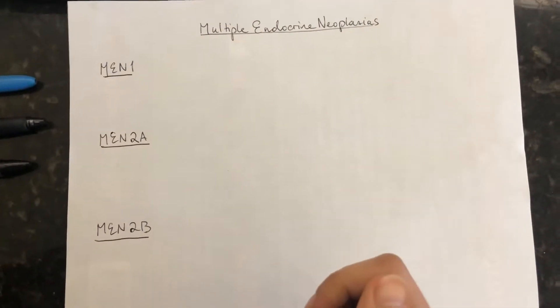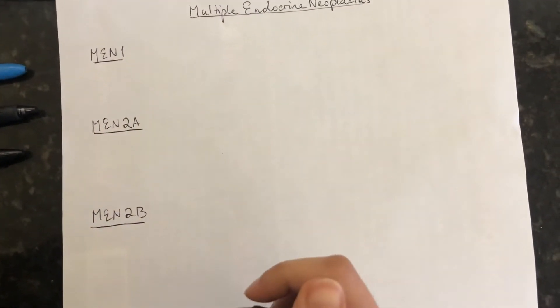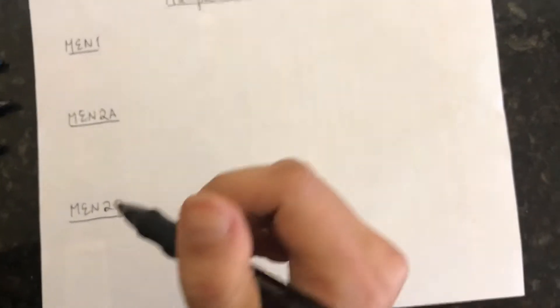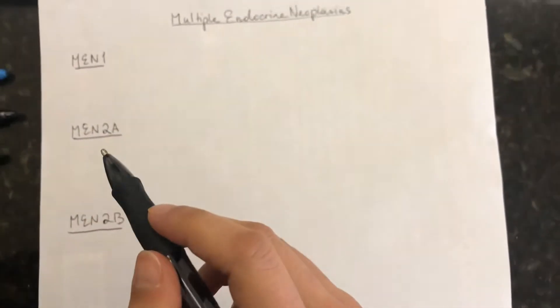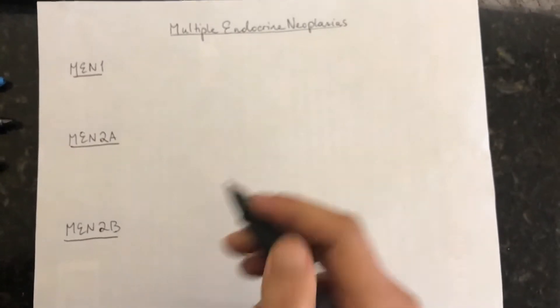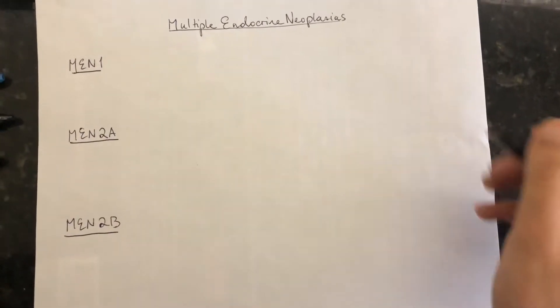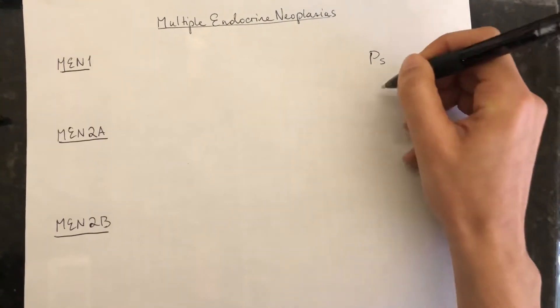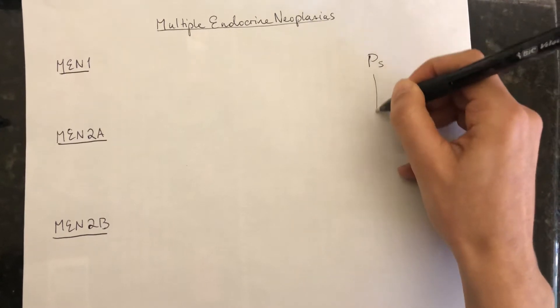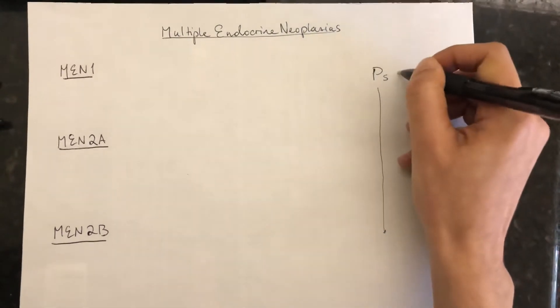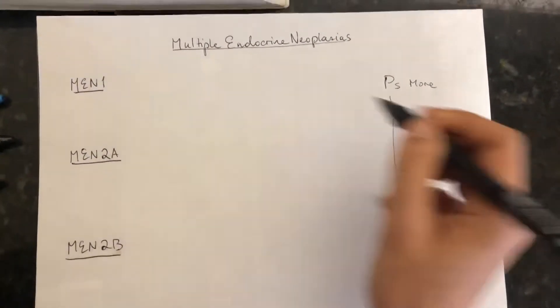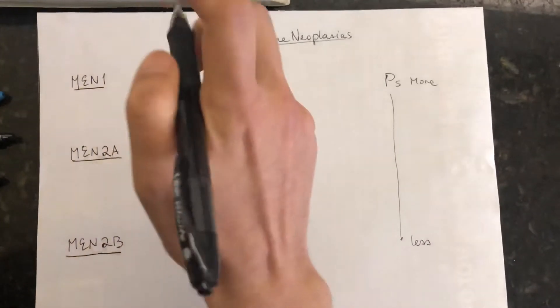Hello, so I have a quick and dirty mnemonic for remembering Multiple Endocrine Neoplasia — that's MEN 1, 2A, and 2B. The easy way to do this is to remember that you have more P's at the top and less as you go down.